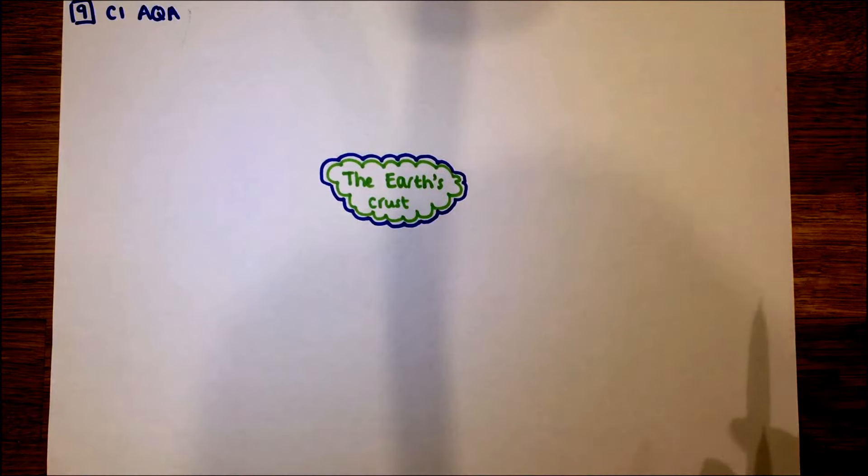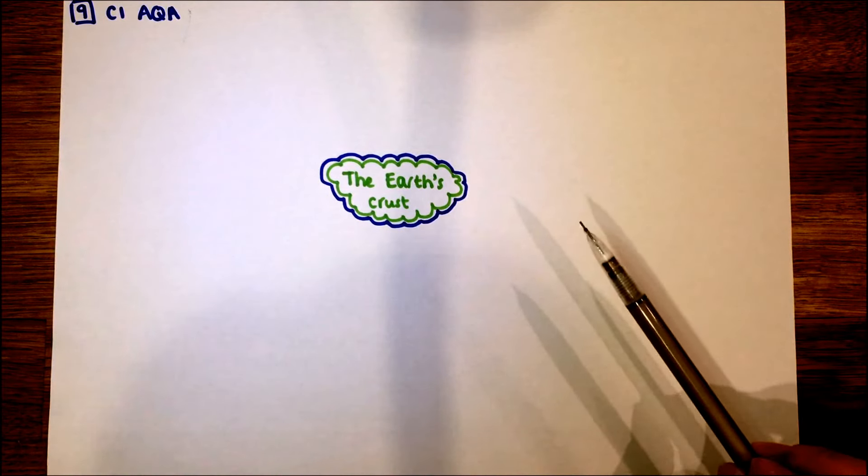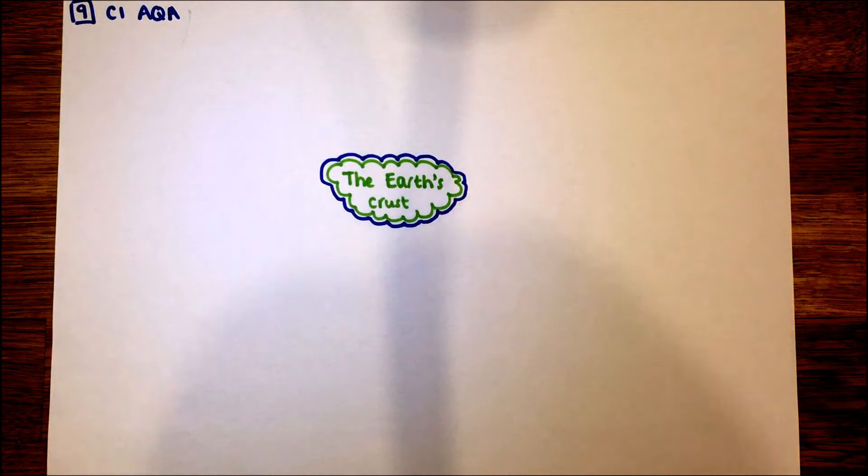This is the ninth and final revision video for C1. So almost finished. It's on the Earth's crust. We're going to look at the surface of the Earth, the Earth's structure and the gases in the Earth's atmosphere.